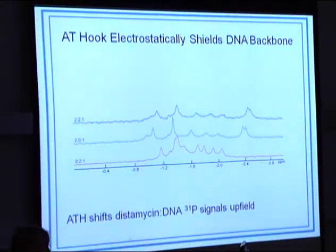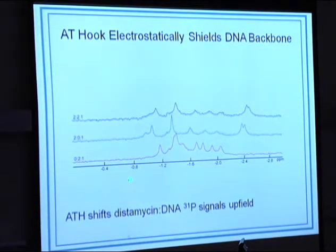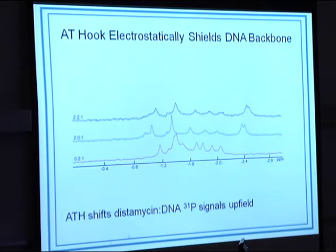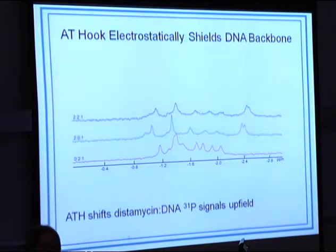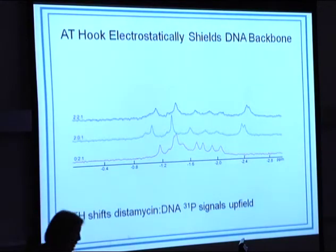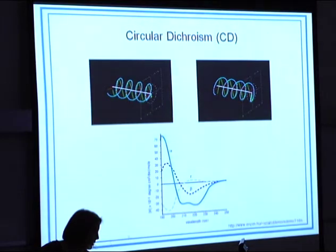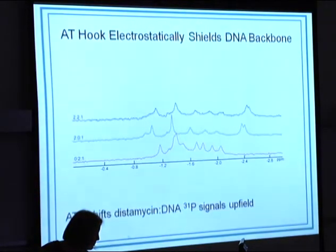We still had some questions, so we switched nuclei — instead of proton NMR, we did phosphorus-31 NMR. DNA is rich in phosphorus from all those phosphates, so we can observe that directly. We varied the ratios: zero, two-to-one, two-to-two-to-one. The pattern with just the AT hook present is very tight — all the shifts are close together. Once you add in distomycin, all those shifts separate. With the complex of all three, they're still separated but not quite the same. This indicates that the AT hook, because of all its positive charges, is still hanging on a little bit to that phosphate backbone and is affecting how distomycin binds.